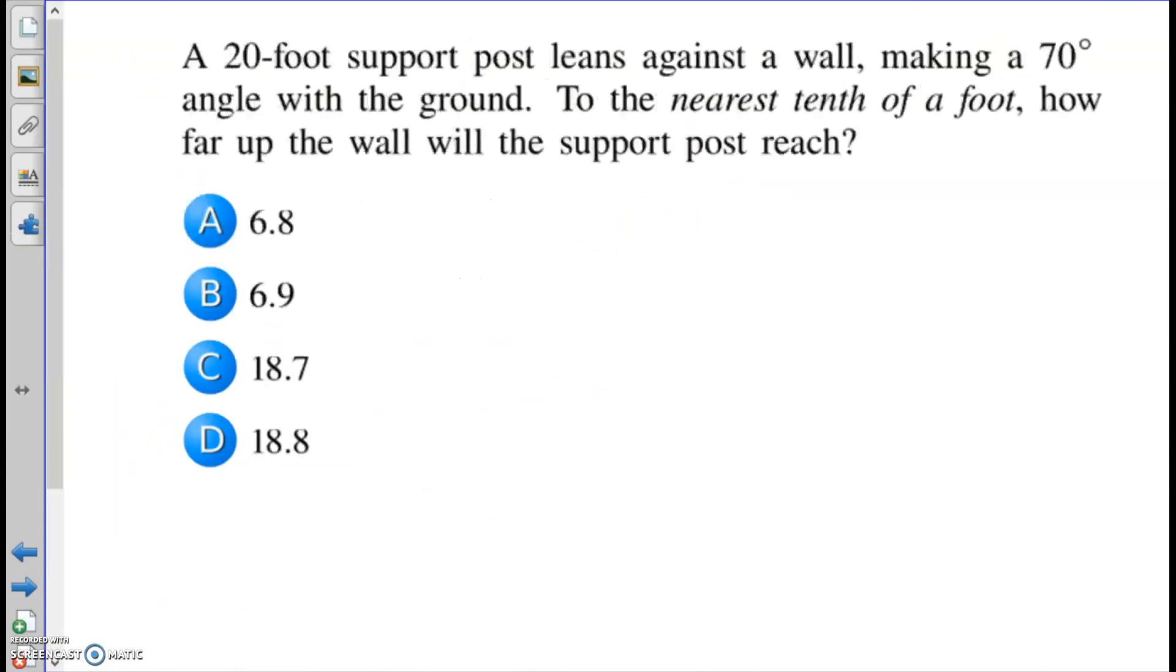Number 11. A 20-foot support post leaning against a wall. It's always a post leaning against a wall or a ladder leaning against a wall. Either way, they're just trying to make a right triangle here. But here's your post. And it's a 20-foot long post. Leans against the wall, making a 70-degree angle with the ground. So this post is making an angle with the ground. The ground is what we're going to call the bottom. So that's your 70 degrees. To the nearest tenth, circle keywords of a foot. How far up the wall does the support reach?